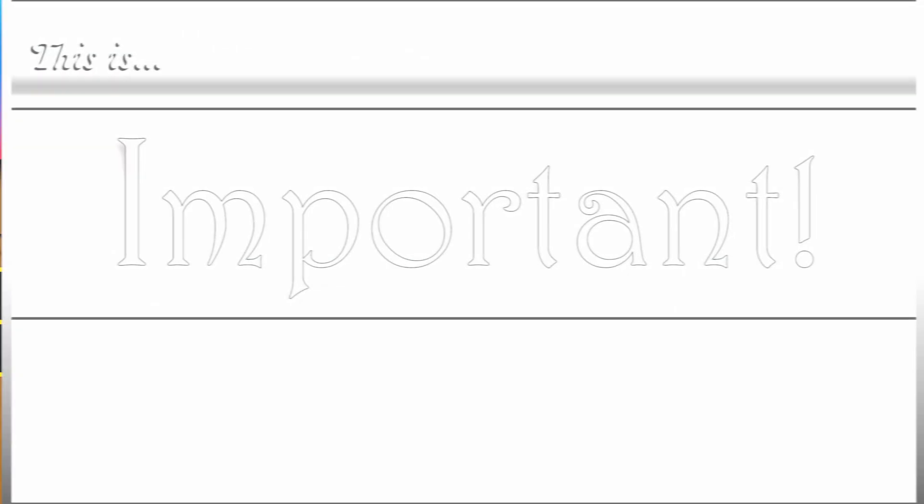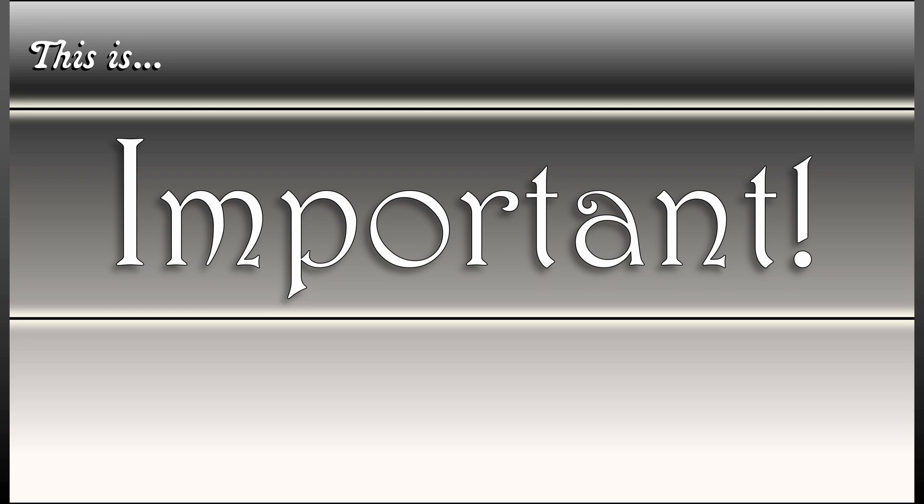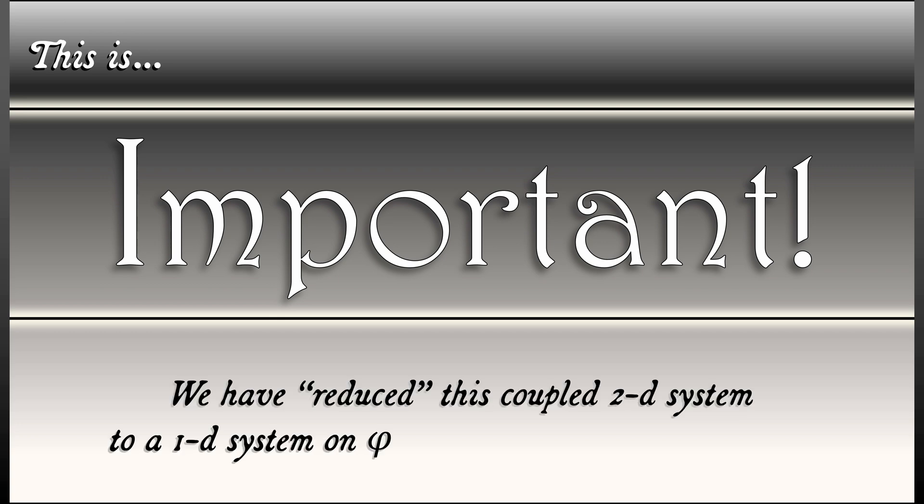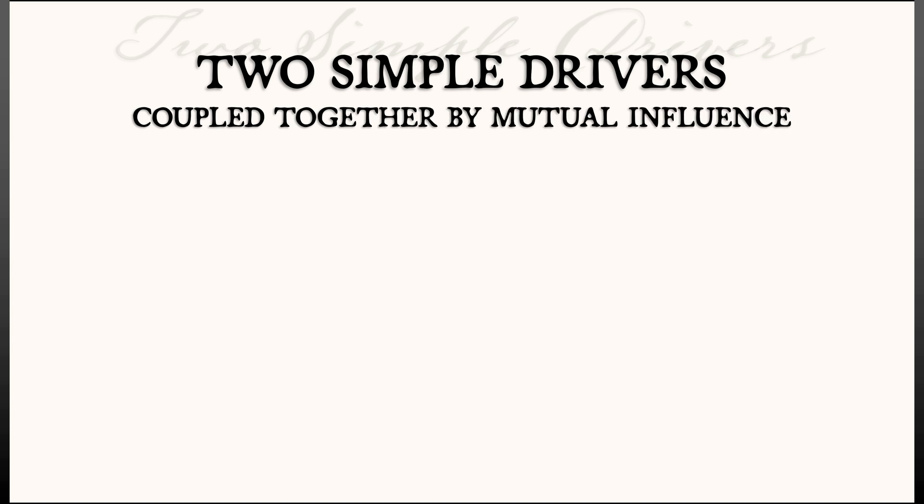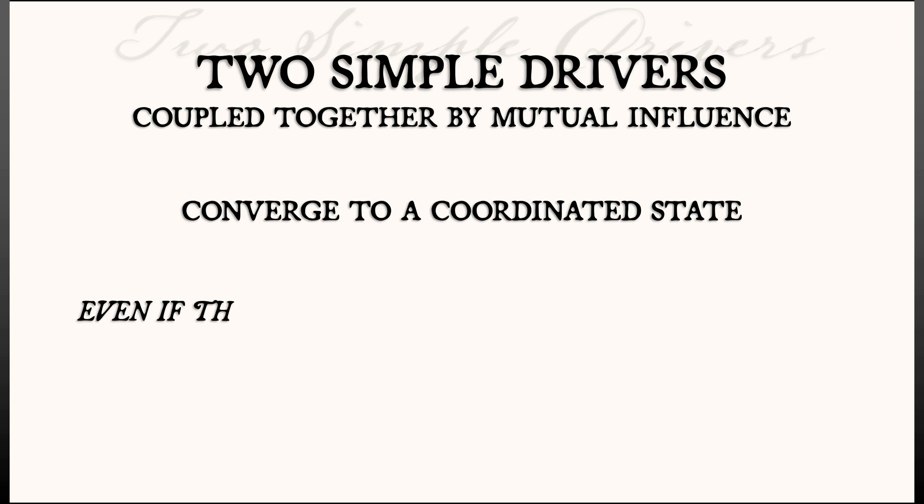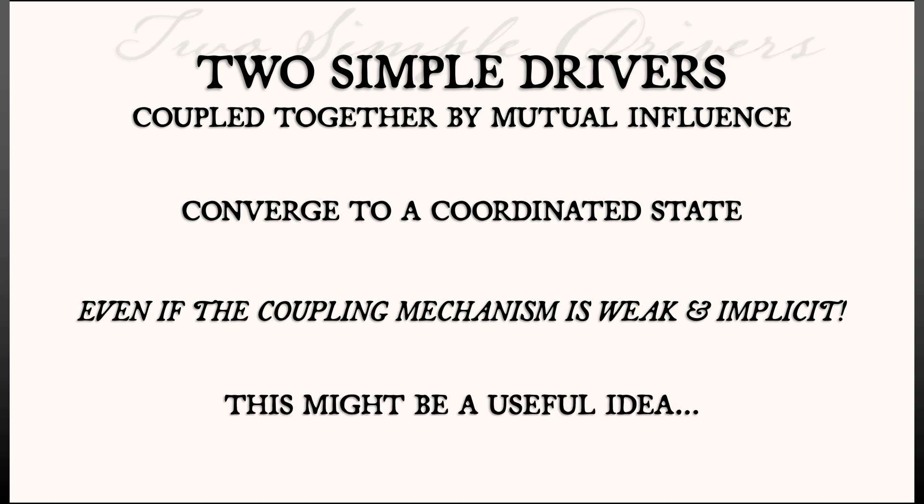And this is rather important. We have reduced this coupled two-dimensional system to a one-dimensional system and classified the equilibrium. And even though this is a simple system, just two drivers coupled together, we can nevertheless show that it converges to a coordinated state, even if that coupling mechanism is weak and we don't know exactly what the coupling function is. I wonder if that might be a useful idea.